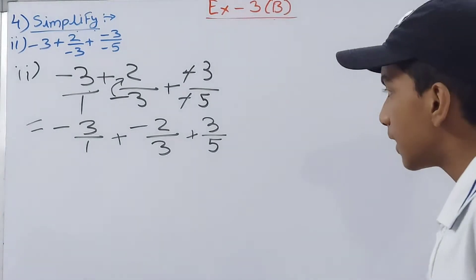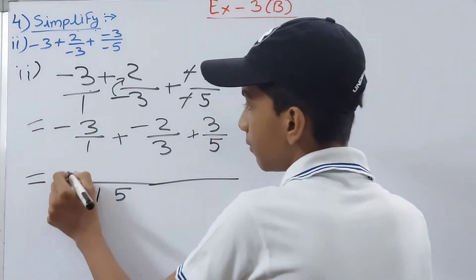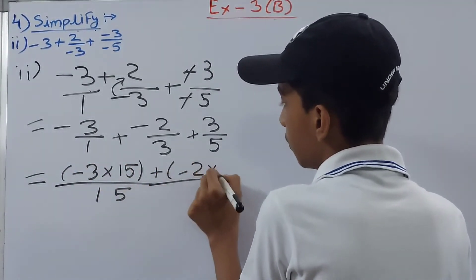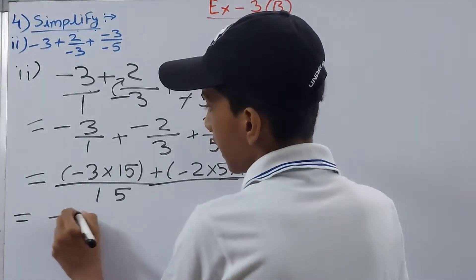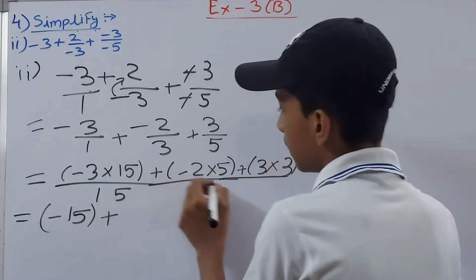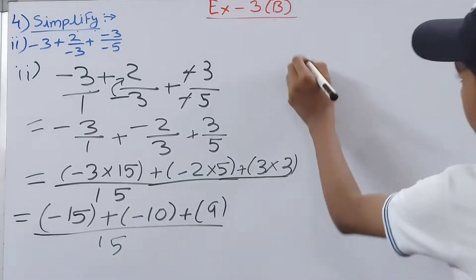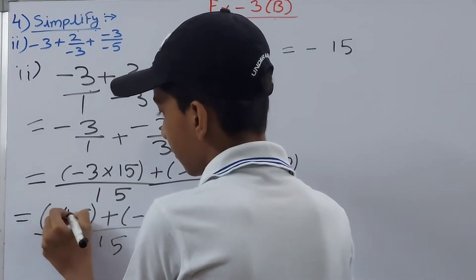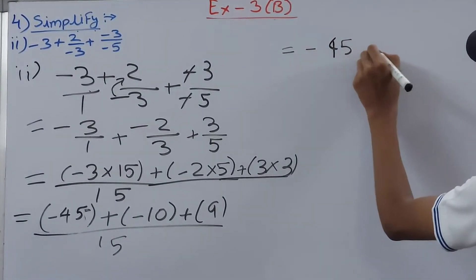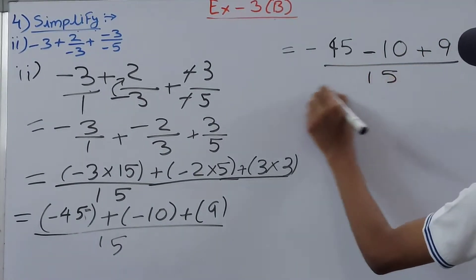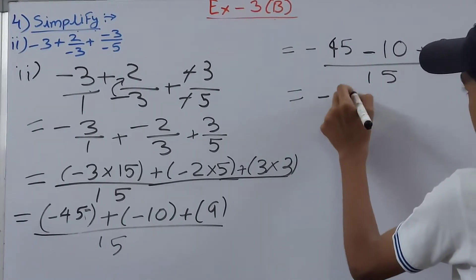The LCM of 1, 3, and 5 is 15. So: (-3) × 15 = -45, plus (-2) × 5 = -10, plus 3 × 3 = 9, all over 15. Opening the brackets: -45 - 10 + 9 = -55 + 9 = -46 upon 15.